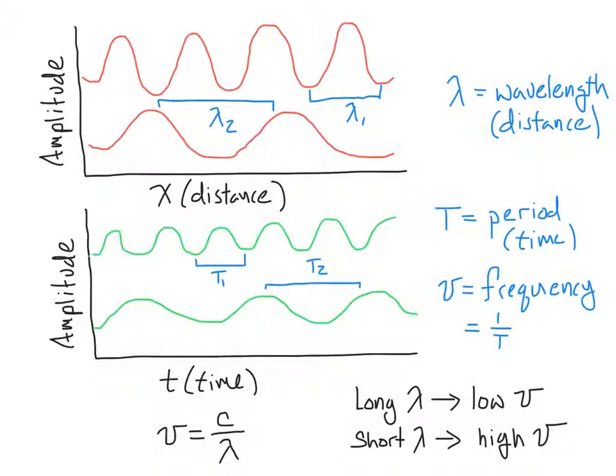That mathematical relationship is that the frequency is equal to the speed of the wave divided by the wavelength. Because we're talking about light, there's a constant speed in a vacuum. We give that the symbol C and that's 3.0 times 10 to the 8th meters per second.